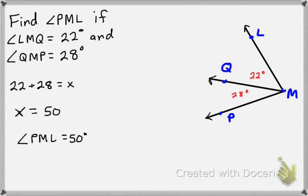Okay, so this time, the two angles you were given were both the smaller parts. So we do small part plus small part equals big part. PML is what we're trying to find, and that is our X value. So we get X equals 50, and then we answer the question. So angle PML is 50 degrees. Please make sure you have the degrees on there.